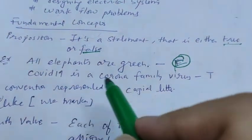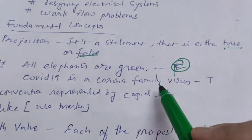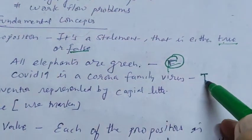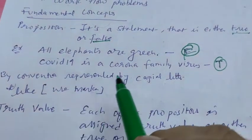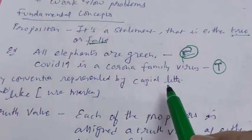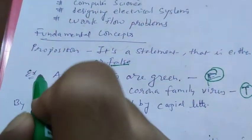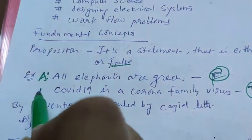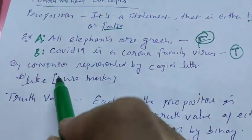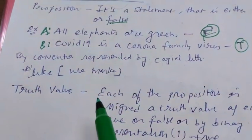COVID-19 is a corona family virus. Is it true? By convention, it is represented by capital letters like A, like B. This is the convention to use capital letters.